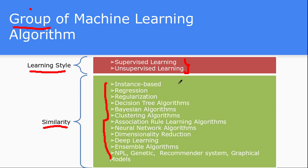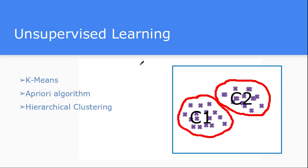So in this tutorial we have seen how any machine learning algorithm can be classified into either the supervised way of learning or the unsupervised way of learning. There are other ways of learning as well, but most algorithms fall into these two categories. In the next tutorial we are going to see how similarity-based individual algorithms work, and then we will move on to the implementation of individual algorithms.